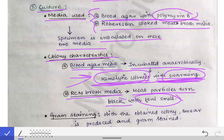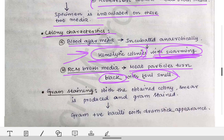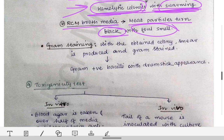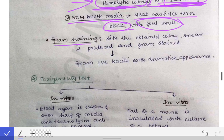In Robertson's Cooked Meat broth, the meat particles turn black with a foul smell. This is because Clostridium tetani is a proteolytic bacterium — it digests protein from the meat particles, turning them black with foul-smelling byproducts. In contrast, saccharolytic bacteria turn meat particles pink due to saccharide digestion. After culture, gram staining of the colony shows gram-positive bacilli with drumstick appearance.